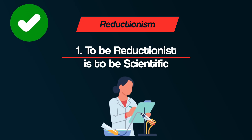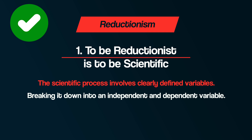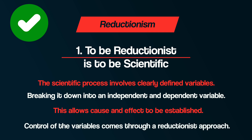So in this debate, which one is better — should we adopt a reductionist or a holistic explanation of behavior? Some have argued for a more reductionist view. Firstly, to be reductionist is to be scientific, because the scientific process involves clearly defined variables — breaking complex behavior down to a single component. This reductionist approach allows for cause and effect to be established, and you can only establish cause and effect if you have control of the variables, which you only achieve through being reductionist.